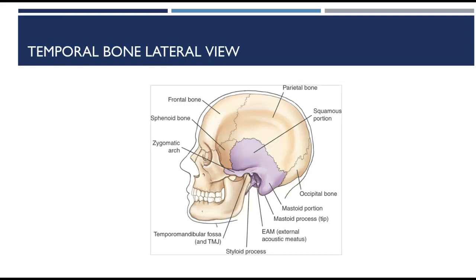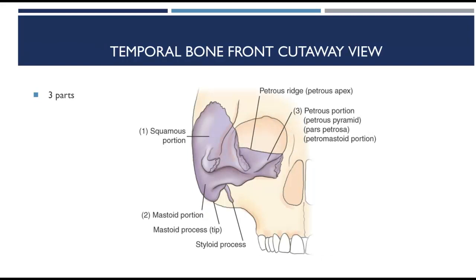The temporal bones, one on each side, articulate with three cranial bones: the parietal, the occipital, and the sphenoid. The temporal bones house the delicate organs of hearing and balance. Each temporal bone is divided into three parts: the squamous portion, which is the thin upper portion forming the wall of the skull; the mastoid portion, which is posterior to the external auditory meatus (EAM) and contains many air cells; and the petrous portion, which houses the organs of hearing and equilibrium.